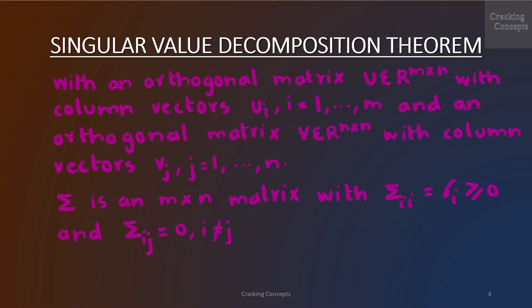With an orthogonal matrix U of size m×m with column vectors u_i, i=1,...,m and an orthogonal matrix V of size n×n with column vectors v_j, j=1,...,n. Moreover, Σ is an m×n matrix with σ_ii ≥ 0 and σ_ij = 0 if i ≠ j.